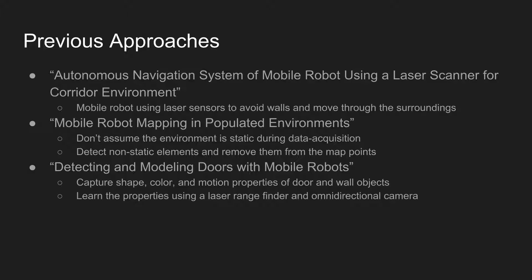Talking about some previous approaches that have been done, these three papers are all similar to this robot's goal but none of them combine all the same aspects together. The first is an autonomous navigation system of a mobile robot using a laser scanner for corridor environments, where they used a mobile robot with laser sensors primarily to avoid walls and obstacles and move through the surroundings successfully on its own.